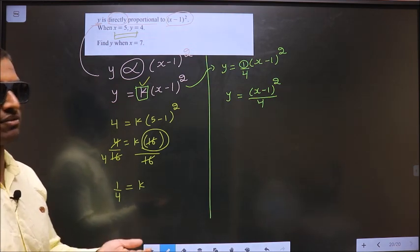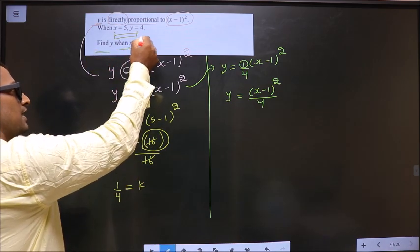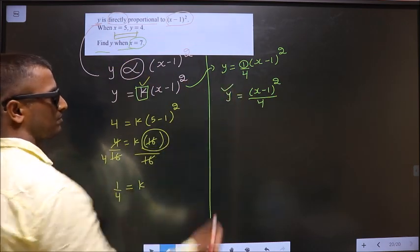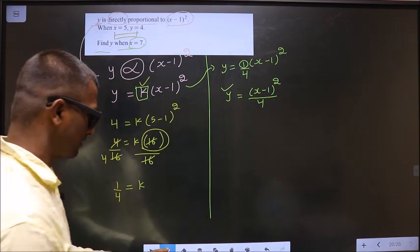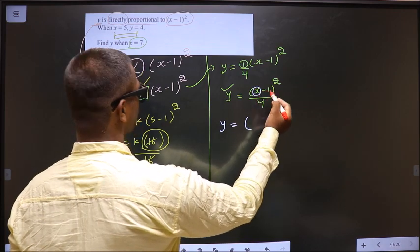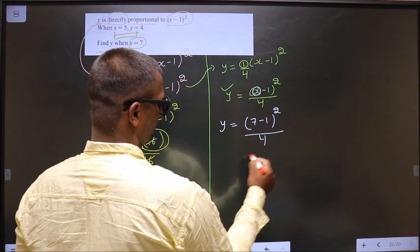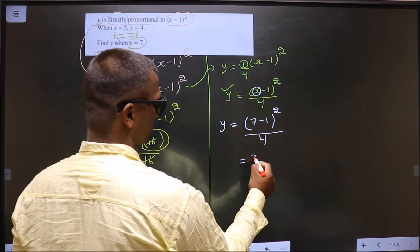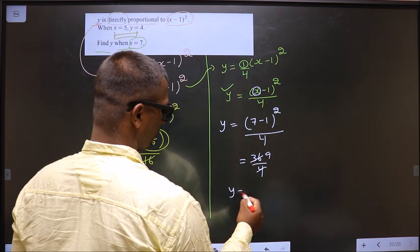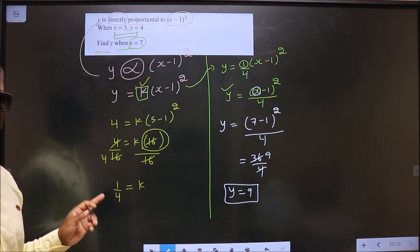Now the next one. Find y when x equal to 7. So replace x equal to 7 in that, you will get the value of y. So y equal to, in place of x, 7. So 7 minus 1 is 6. 6 square is 36 by 4. So y equal to 9. This is our answer. Am I clear?